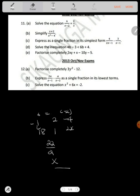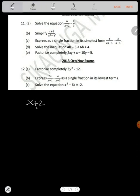Then, question 11b says simplify x plus 2 over x squared minus 4. Now we look at the top here. It's constant. You can't factorize that. Then what we have here is a difference of two squares.